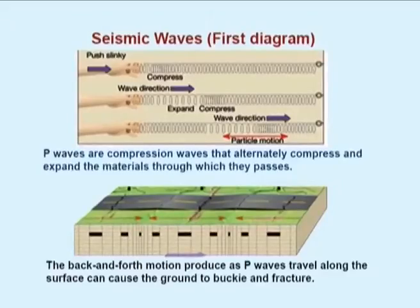What do you mean by seismic waves? There are three different waves: primary waves, secondary waves, and L waves. These three seismic waves all travel through the ground during earthquake times. If you see this diagram, there are P waves or compressional waves. Most earthquakes occur in back and forth motions. During that time, P waves will travel along the surface and can cause the ground to buckle and fracture.